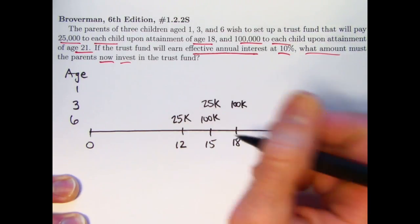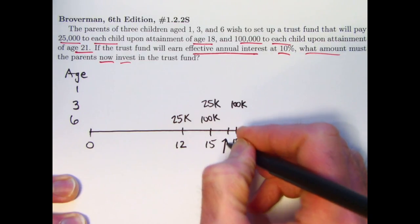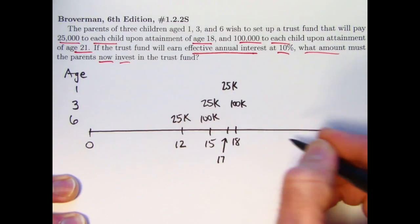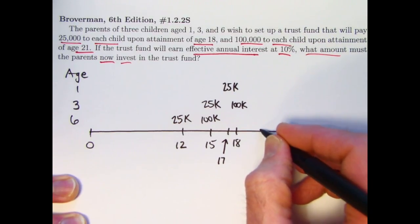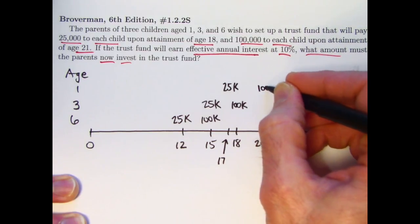Finally, to the one-year-old, they will reach the age of 18 in 17 years. Let's put a 17 on there. $25,000 to them in 17 years. And then in 20 years, when they reach the age of 21, they will get $100,000.